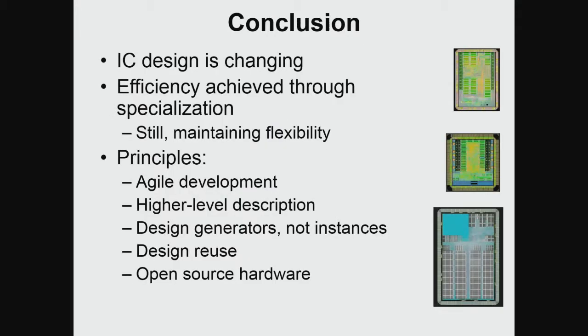IC design is changing and energy efficiency is being achieved through specialization of designs. In order to do that, we still have to maintain flexibility. The way we do that is by borrowing many ideas from software development — building things that can be agilely developed, using higher-level descriptions, designing generators not instances, reusing designs, and relying on open source hardware.